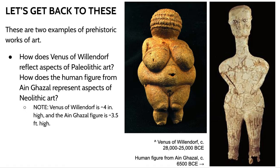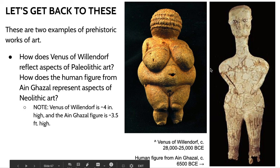Now, knowing what you do about the Paleolithic and the Neolithic, go back to the two sculptures from the warm-up. Think about how the Venus of Willendorf reflects aspects of Paleolithic art, and how the human figure from Angazal represents aspects of Neolithic art. Apply your new contextual knowledge to finish the last part of your handout and complete the comparison.